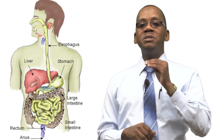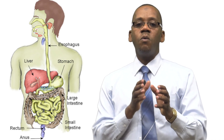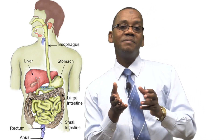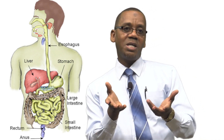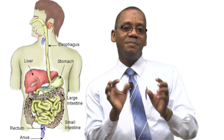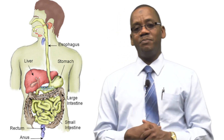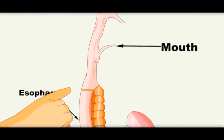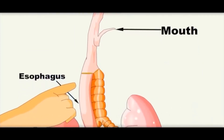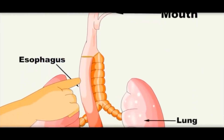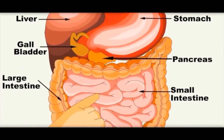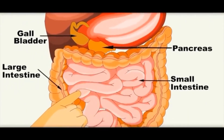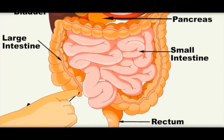Can you now say, when you eat, where does the food pass? The food passes into the mouth, then the esophagus, small intestine, large intestine, and to the rectum.